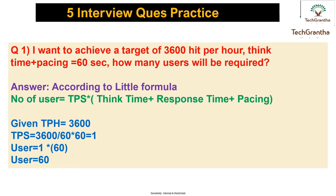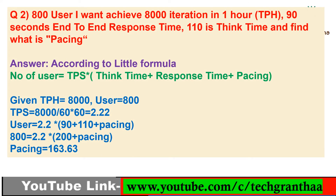Moving to the next question: 800 users are given, and we want to achieve 8,000 transactions per hour. The 90-second end-to-end response time is given, and 110 seconds is the think time. We need to find the pacing value. Using the same formula — number of users equals TPS multiplied by think time plus response time plus pacing — the 8,000 transactions per hour converts to approximately 2.2 TPS when divided by 3,600.